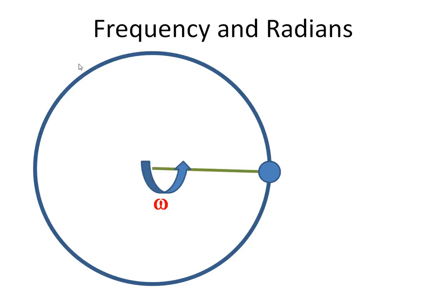Now let's say it completed the cycle in one second, or we can say it did one cycle per second. We know that frequency is cycles per second, so if it rotated one cycle per second, then it did so at a frequency of one hertz.